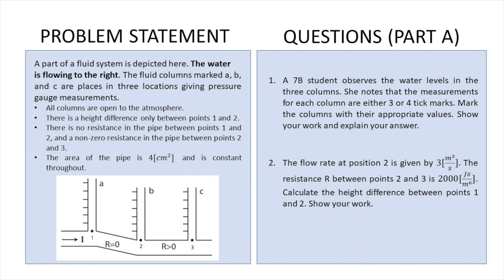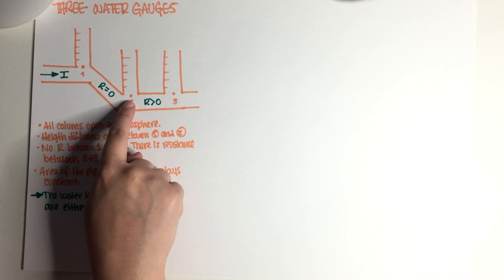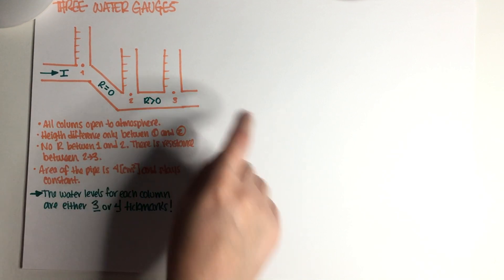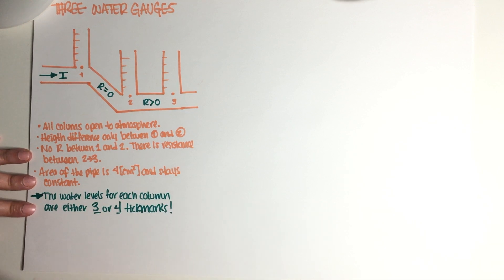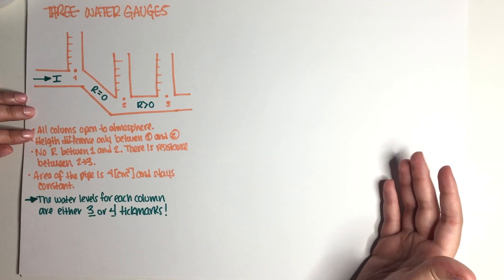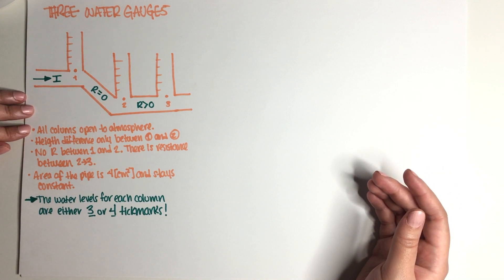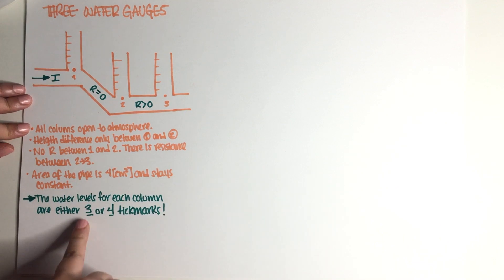The first question in Part A: a student observes the water levels in the three columns and notes that the measurements for each column are either 3 or 4 tick marks. We need to mark the columns with their appropriate value and explain our answer. This is basically a comparison exercise where we compare water columns and figure out which is greater — whichever is greater gets 4 tick marks and whichever is smallest gets 3 tick marks, since those are our only two options.